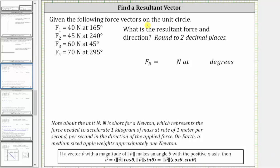In this problem, we are given four force vectors on the unit circle and asked to determine the resultant force and direction. To do this, we'll write each of the vectors in component form, find the sum of the vectors, then determine the magnitude and direction to answer the question.